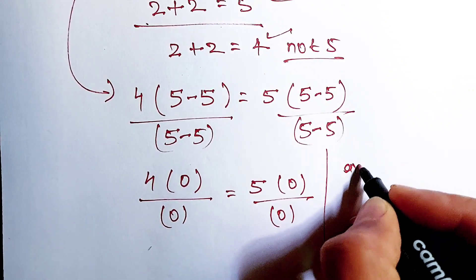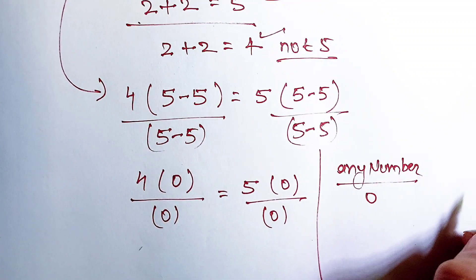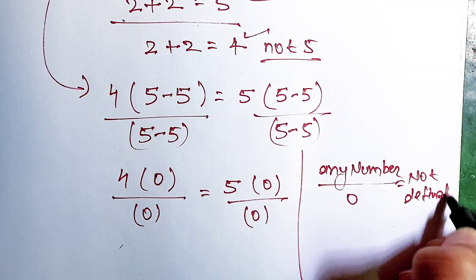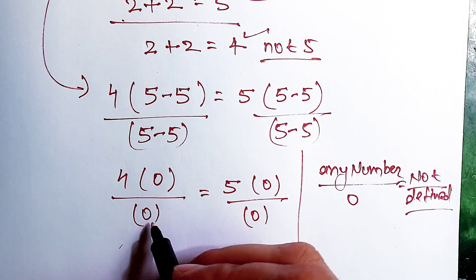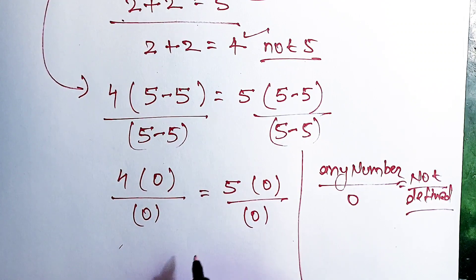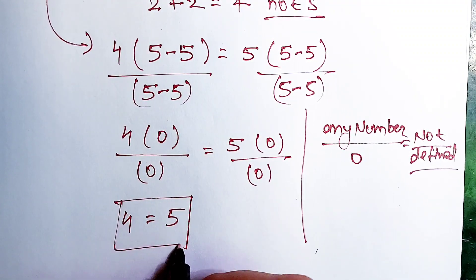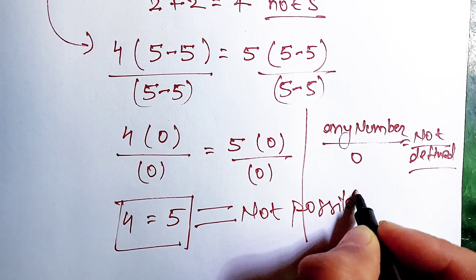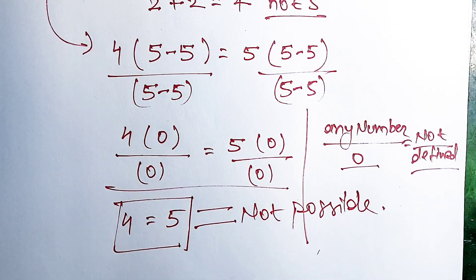We know that any number divided by 0 is equal to not defined. And that is our mistake in this question — we divided by (5 minus 5), which equals 0, and this leads to 4 equals 5, which is not possible. So we can't divide any number by 0; it is equal to not defined. That is the mistake in this question. Hope you understood it!